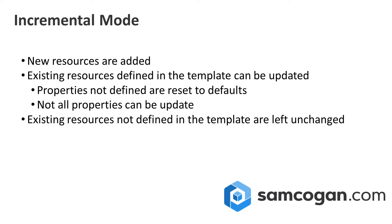There are a couple of things to be aware of with this. Firstly, if you deploy a template against an existing resource and you don't define some properties, they don't get ignored — those properties will be set to whatever the defaults were. Most of the time this doesn't affect you because if you created this resource in the template in the first instance and didn't define the properties, you would have got the defaults. However, if the resource wasn't originally created by your template, or you've changed your template, or you're using a new template, you need to be aware that anything you don't explicitly define will be set to defaults, which could be different to what you've currently got before you deploy the template.